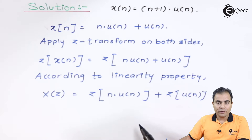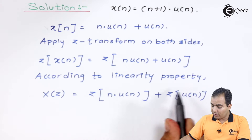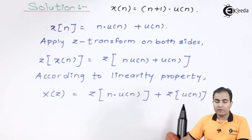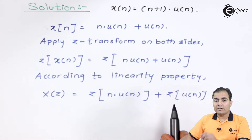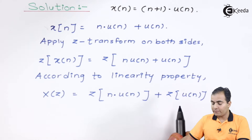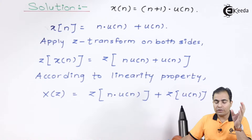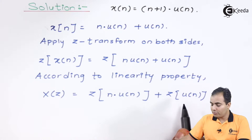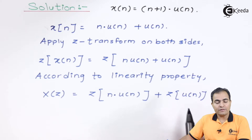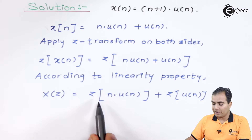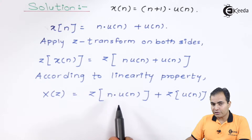The Z-transform of u(n) we have already calculated while solving the Z-transform of the unit step sequence. The result is that the Z-transform of u(n) is z/(z−1). For the next part, we have n·u(n), and here we have to use the differentiation property.